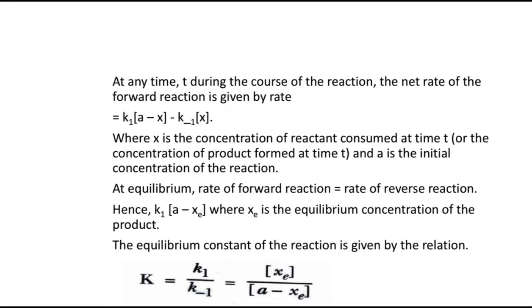During the course of the reaction at any particular time T, the rate of the forward reaction is given as K1(A - X) - K-1(X), where X is the concentration of the reactant consumed at time T and A is the initial concentration. At equilibrium, the rate of forward equals the rate of reverse reaction: K1(A - Xe) = K-1(Xe), where E stands for equilibrium. Therefore the equilibrium constant K = K1/K-1 = Xe / (A - Xe).